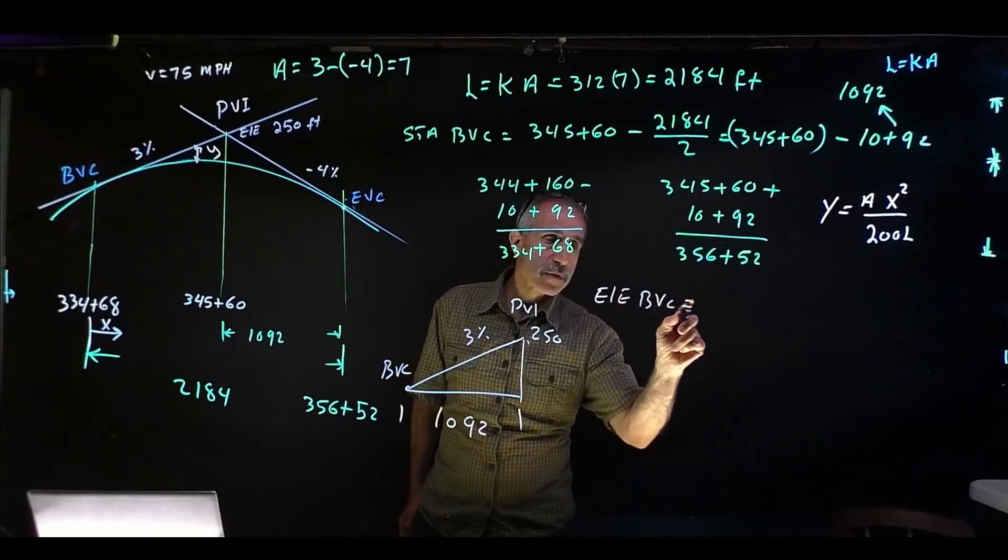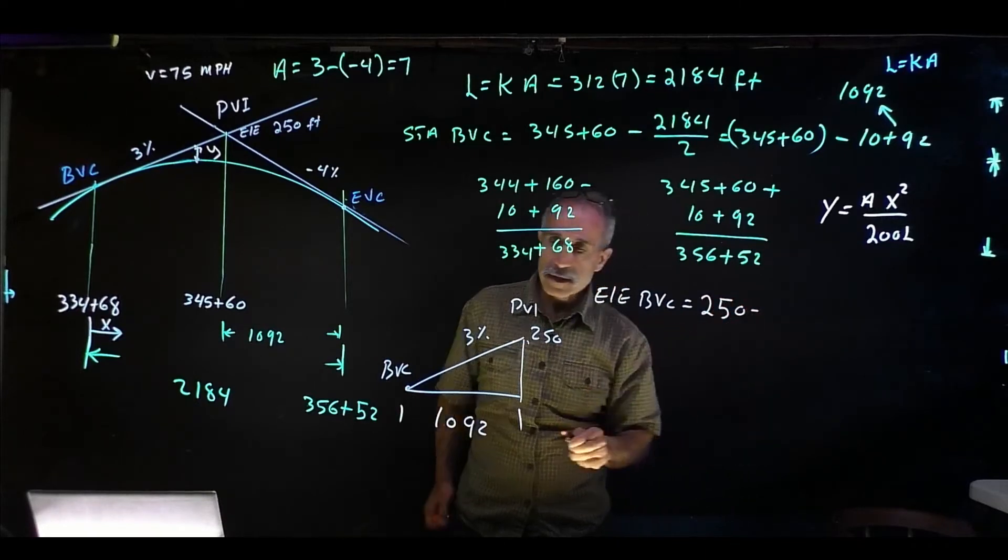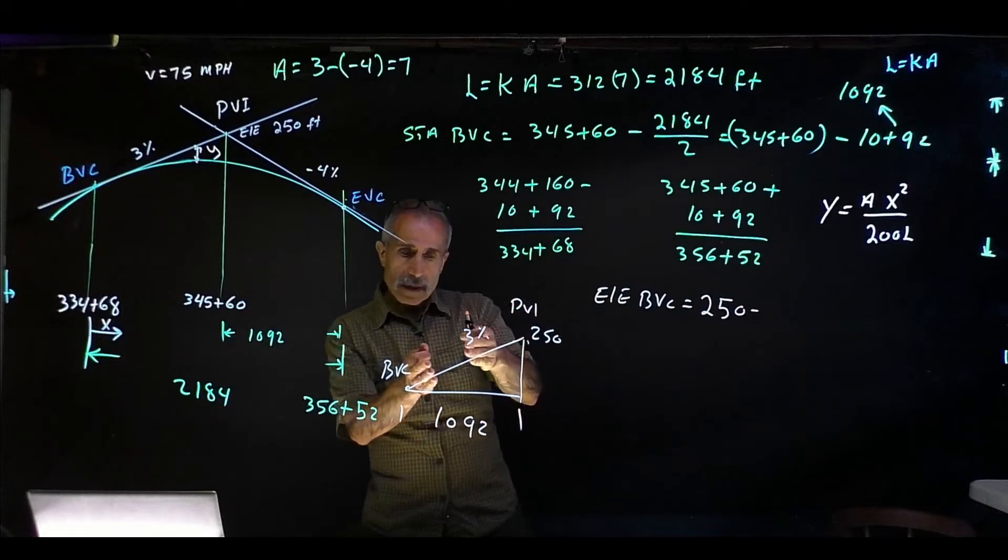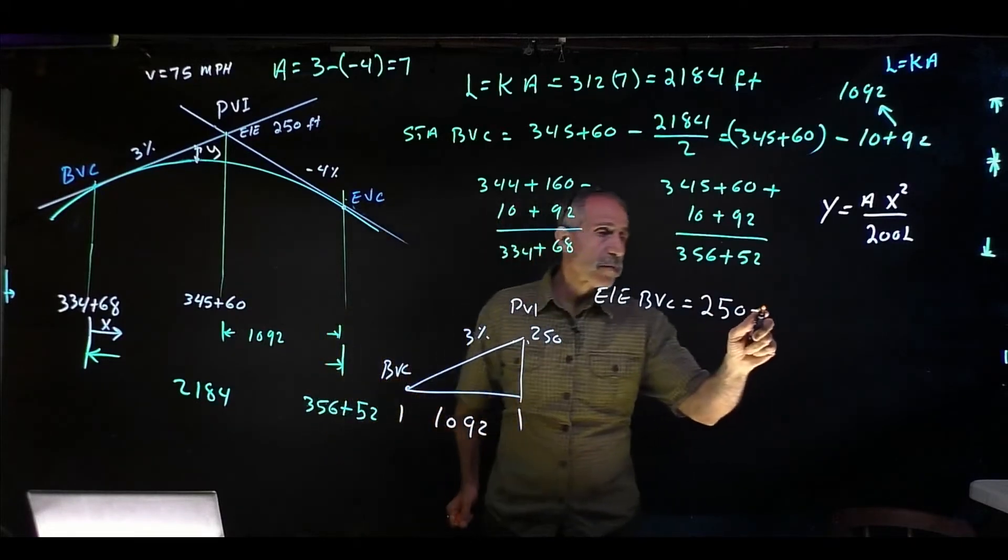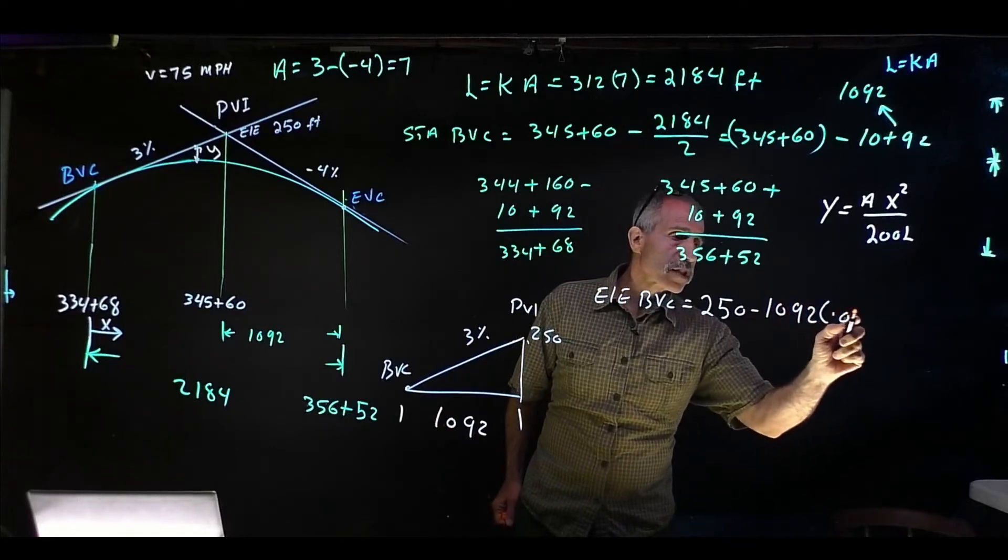Elevation at BVC equals 250 minus, I'm coming down 3%, each foot 3%, so I'm going 1092. So it's going to be minus 1092 times 3%, which is 0.03.